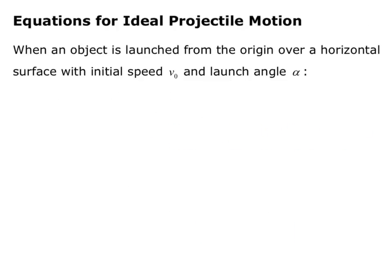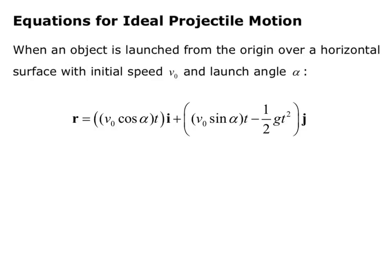Now let's discuss some equations for ideal projectile motion — when an object is launched from the origin, 0, 0, over a horizontal surface, with initial speed V0 and launched at angle alpha. The vector equation for position, derived in video one, is: vector r equals V0 cosine alpha times t, times i, plus V0 sine alpha times t minus one-half gravity times t-squared, times j. The other equation is the range equation: capital R equals V0 squared divided by gravity, times sine of 2 alpha.